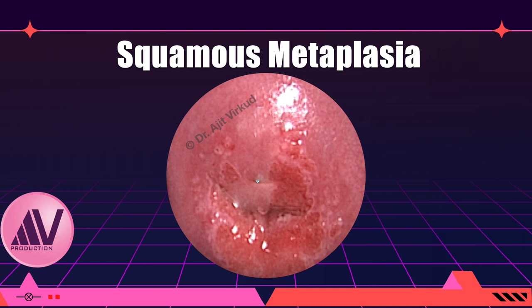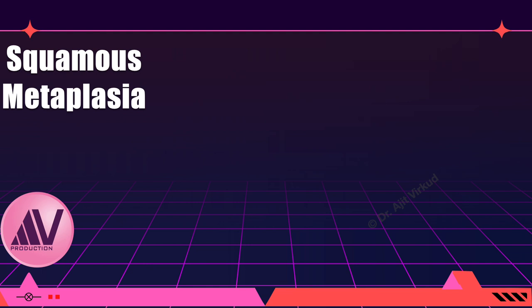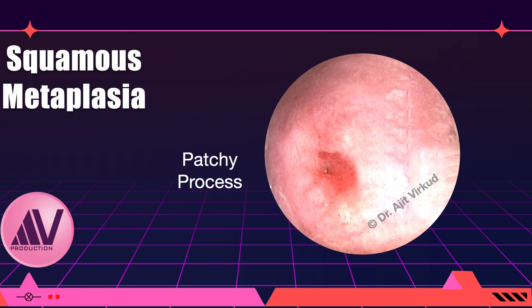In the past, it was thought that adjacent squamous cells grow sideways to cover the denuded area, but that is not true. An important point to note is that the process is patchy and by no means complete. It starts at the apex and at the base of cervical crypts and then the two ends meet somewhere in between.